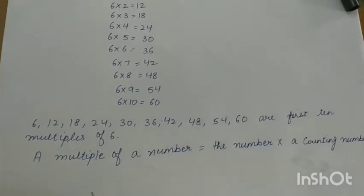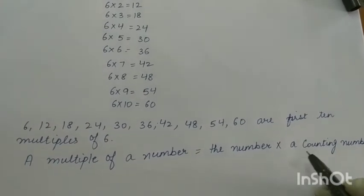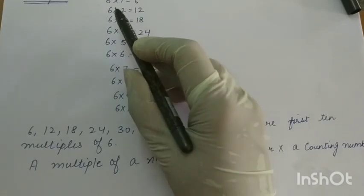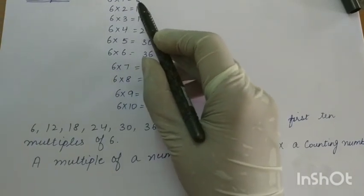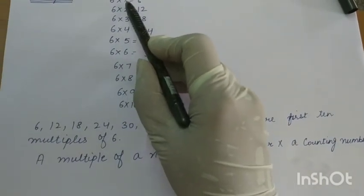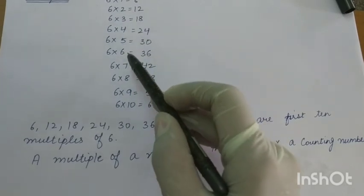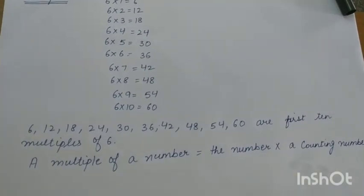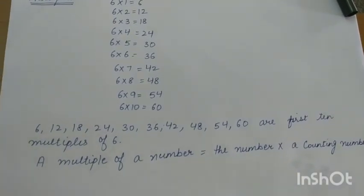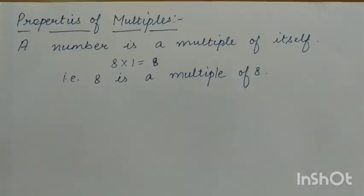A multiple of a number is the number multiplied by a counting number. Here I have written 6 multiplied by 1. The counting numbers are 1, 2, 3, 4, 5, and so on. These all are counting numbers. So, a multiple of a number is a number multiplied by a counting number.